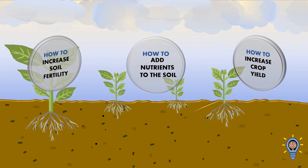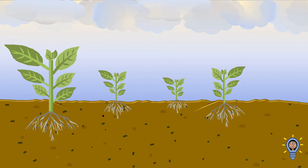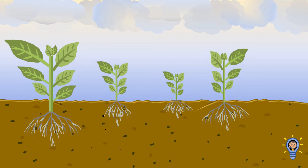Before we begin, let's understand the relationship between soil, nutrients, and crops. A fertile soil is a soil of good quality because it contains essential nutrients such as the macro and the micronutrients. These nutrients are essential for plants to grow healthily.